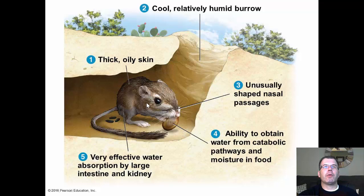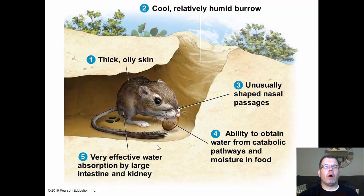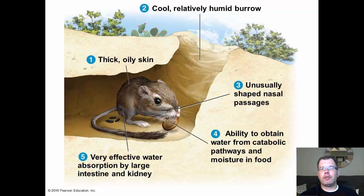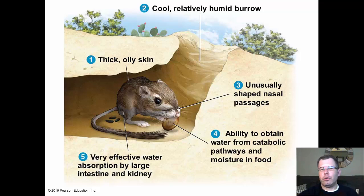One of the big things with mammals is the fur. They have thick oily skin that produces oils to help protect from water loss. They can get water from catabolic pathways and moisture in foods. They have unusually shaped nasal passages to influence how much air they take in. Then there's effective water absorption by the large intestine and the kidney — most water is reabsorbed by the kidney, and you only lose a little bit. The more dehydrated you are, the less water you'll lose during urination.